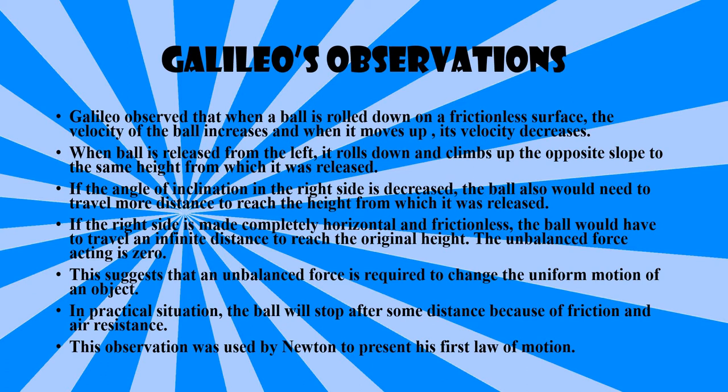When the ball is released from the left, it rolls down and climbs up the opposite slope to the same height from which it was released. If the angle of inclination on the right side is decreased, the ball would need to travel more distance to reach the height from which it was released.